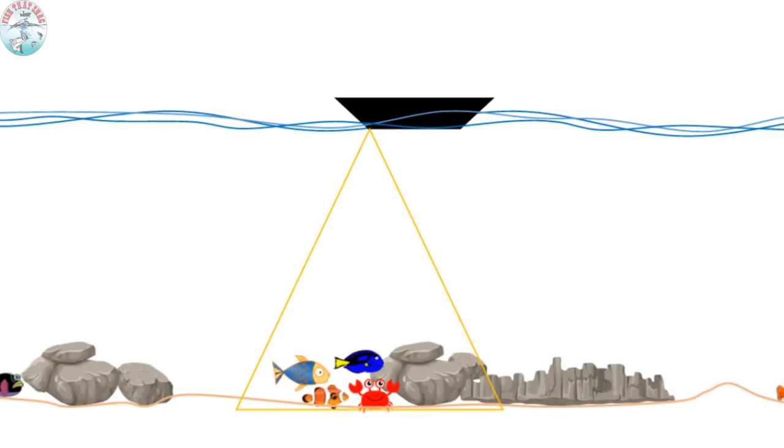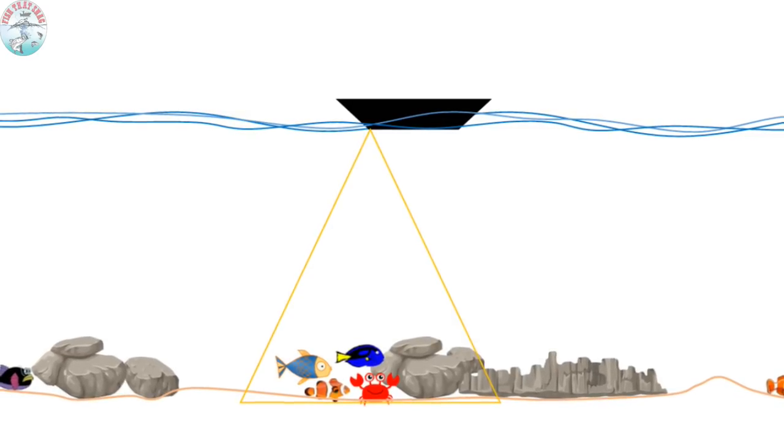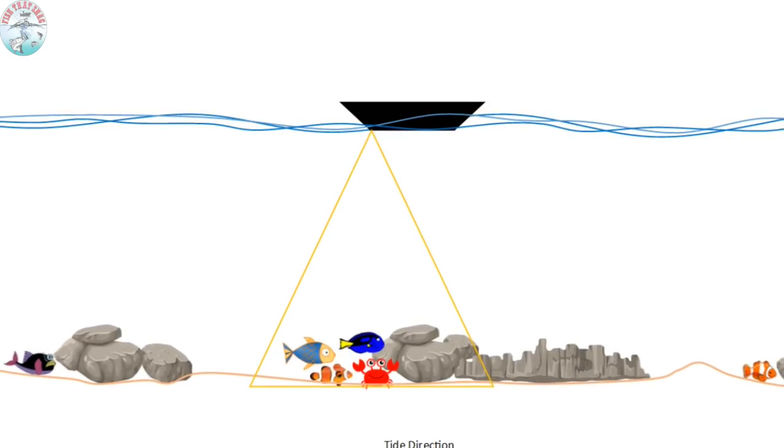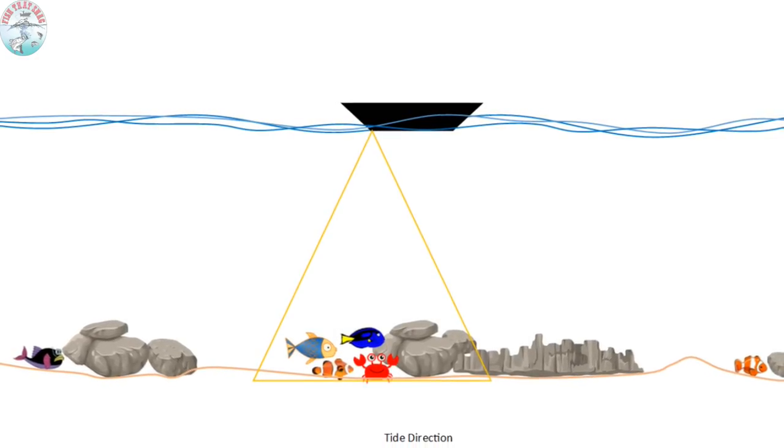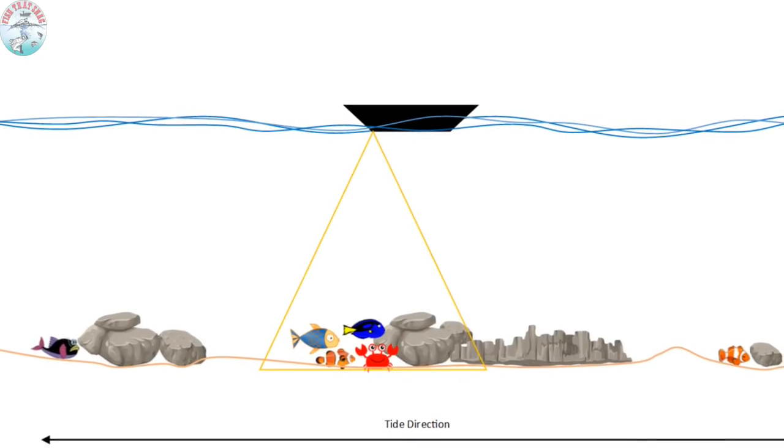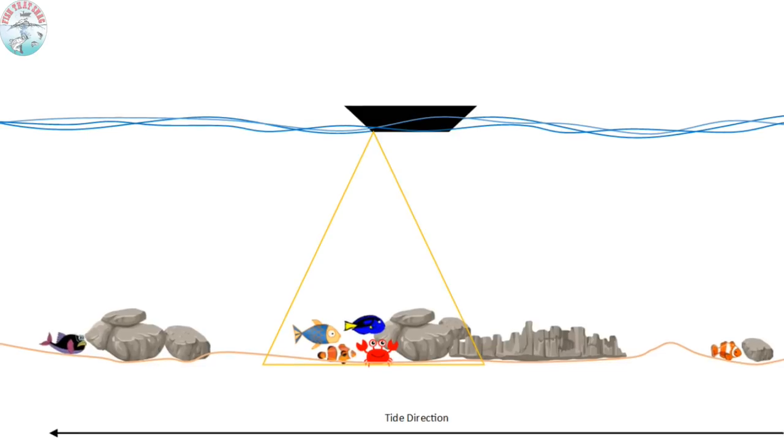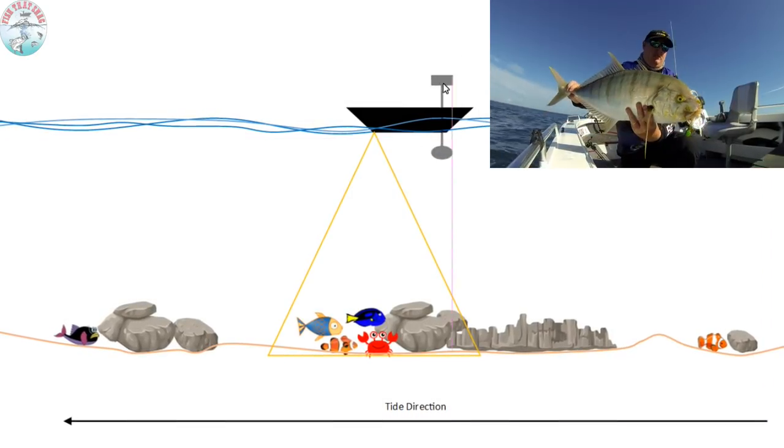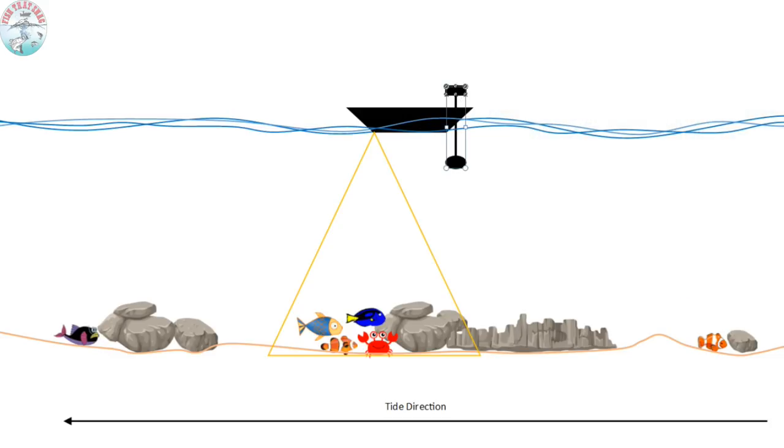Now of course, when you find a fishy looking spot, lots of fish light up on your sounder, the next challenge is trying to hold yourself above these fish so that you can get a lure or bait down on them. As I've mentioned before, drifting across some of these reefs I've covered in a previous video, the link is in the description below. However, today I'm going to talk about using the Minn Kota.